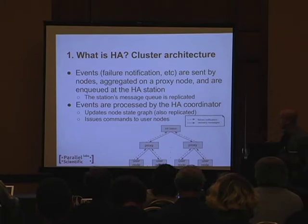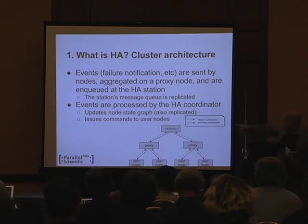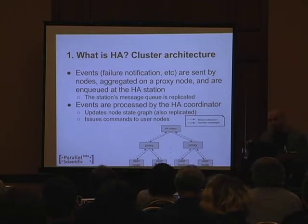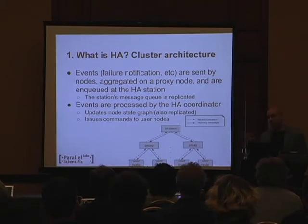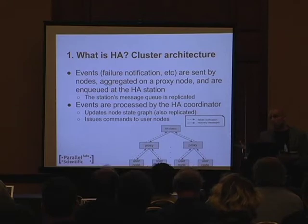The way HA is structured: we have a bunch of nodes actually running services, which I'm calling user nodes. They generate an event — a change in status of a service, a failure message, something that happened that we need to let the other nodes know about. Ultimately these will be managed by what I'm calling the HA station. Messages are aggregated by proxies along the way in a three-level hierarchy. When they reach the station, it's important that we queue these events, and that the queue is replicated, so that if the system handling the queue fails, we don't lose the event. Before the event is acknowledged to the originator, it's replicated to more than one system.